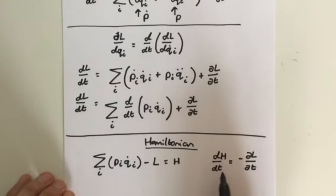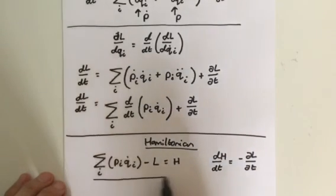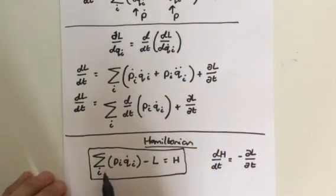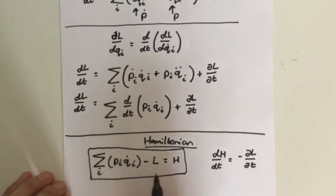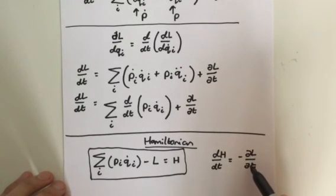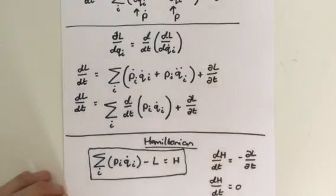The steps leading to this result may seem a bit complicated, but the result is very simple. The new quantity H varies with time only if the Lagrangian has an explicit time dependence. The Hamiltonian — which is basically the total energy — is equal to the sum over i of pi times q-dot-i minus the Lagrangian. If the Lagrangian has an explicit time dependence, dH/dt equals minus dL/dt. And if the Lagrangian does not have an explicit time dependence, then dH/dt equals zero. See you in the next exercise.